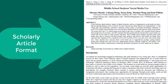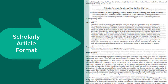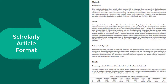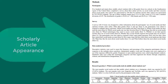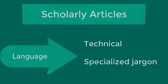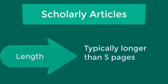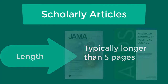The format of scholarly peer-reviewed articles is typically organized to include an abstract or summary, a literature review, and depending on the type of research, sections for methodologies, results, and conclusions. In terms of appearance, they are mostly text with some tables and charts, few graphics or illustrations, and no advertisements. The language is technical and uses specialized jargon of the field. Peer-reviewed articles are usually longer than popular articles and are typically over five pages in length.